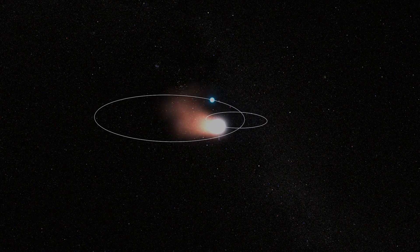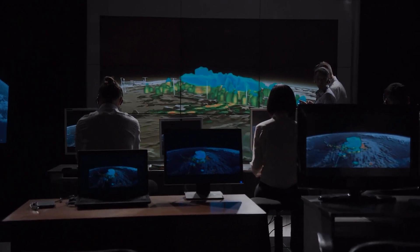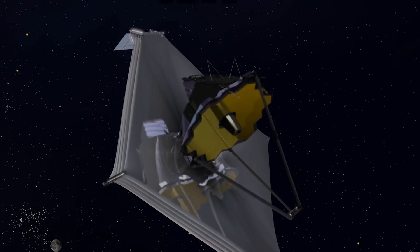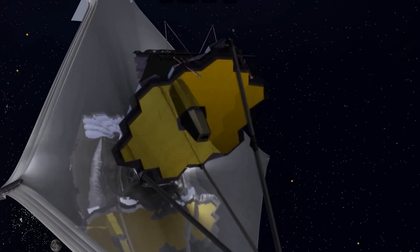That these rings were likely diffraction artifacts caused by WR 140's intense brightness. The peculiar shapes, however, continued to intrigue astronomers and scientists worldwide, highlighting how Webb's powerful instruments sometimes reveal phenomena that defy immediate explanation.